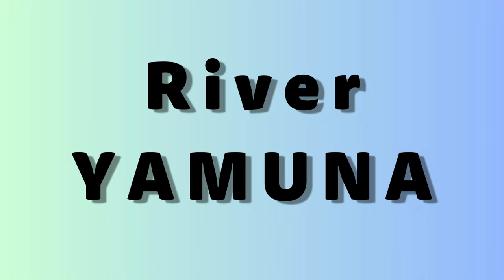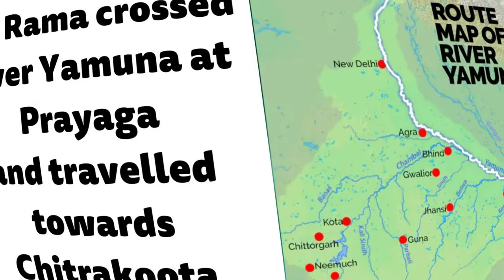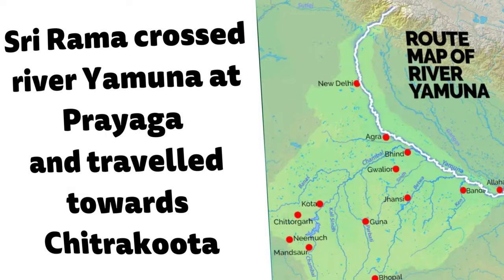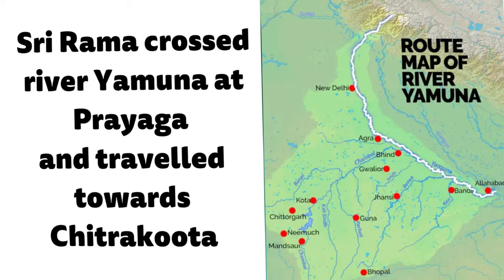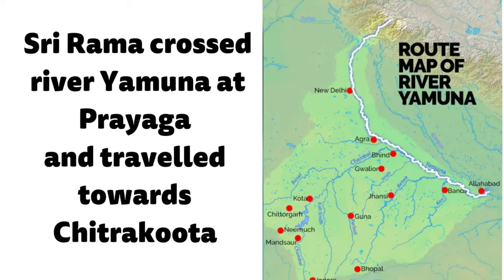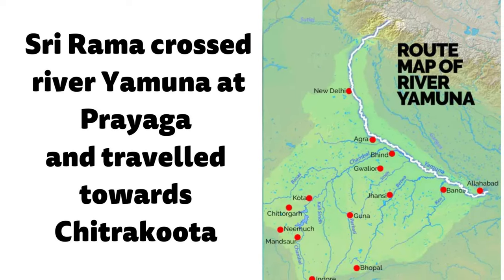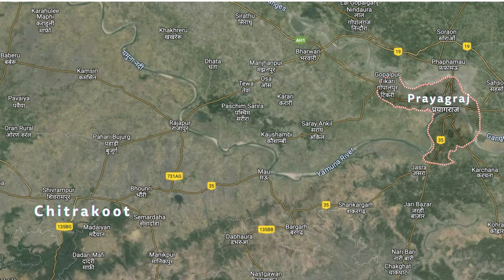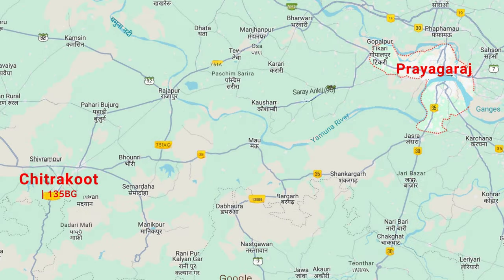River Yamuna: Shri Ram crossed the river Yamuna at Prayaga and travelled towards Chitrakota. Do you think the course of river Yamuna has changed from the times of the Ramayana? Comment below.